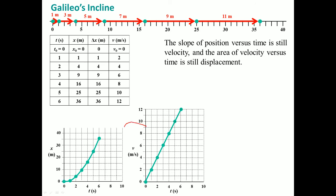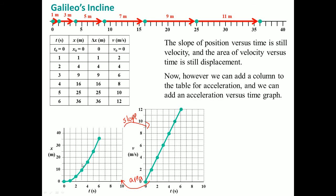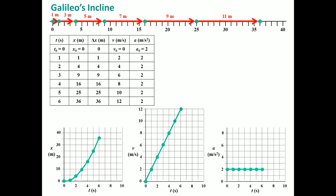The slope of the position versus time graph is velocity, and the area under the velocity versus time graph is displacement. We can add one more column for acceleration — it is 2, 2, 2, 2, 2, 2. That is the delta here, the change, and that change is constant at 2.